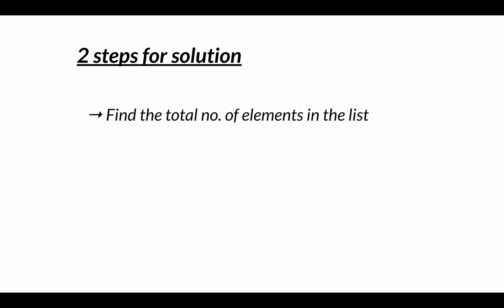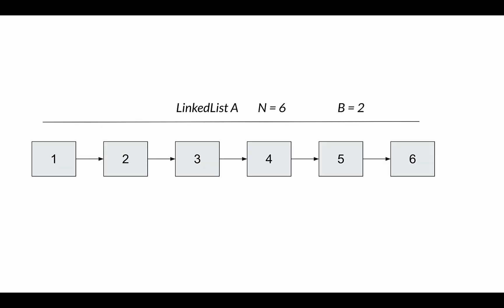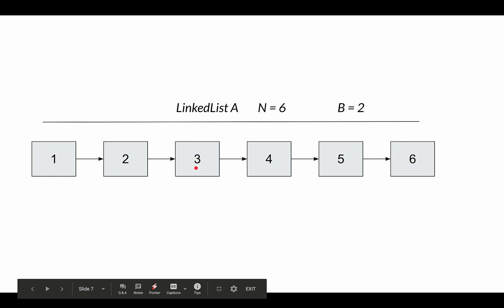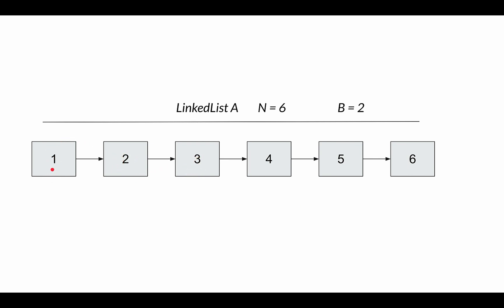Welcome back. I hope you got a chance to try out the solution. There are two steps: first, finding the total number of elements in the list, because to find the center you need the total count. Second, finding the kth element from the center towards the beginning. For a linked list, we traverse from the beginning — reverse traversal going backwards is not possible in a singly linked list.